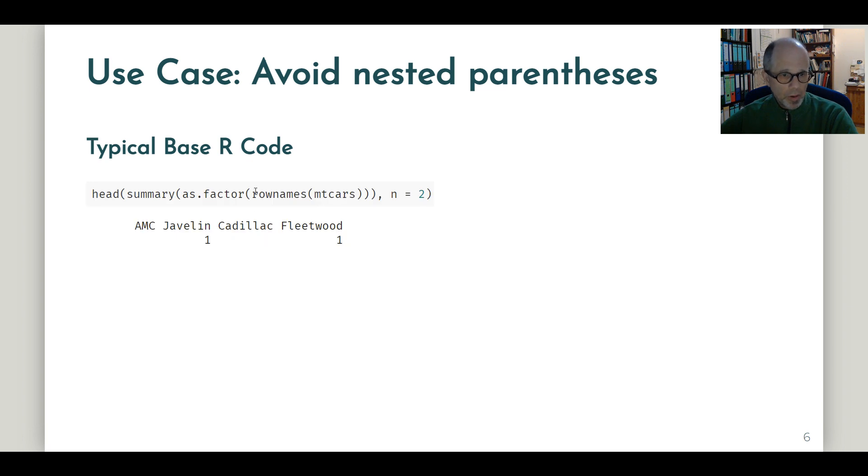So let's see what the pipe can do for us in this case. So the typical base R code with the nested parentheses on the left. And with the pipe we could rewrite this code this way. And now we can conveniently read it from top to bottom. So we start out with the mtcars data set, look at the row names, convert to a factor, apply the summary function and then apply the head function. And now note that the parameter n equals 2 is right next to the head function and not torn apart as in the code on the left. So maybe it takes a bit getting used to if you haven't used the pipe before, seeing these empty parentheses, but always the pipe inserts the object that was calculated on the previous line of code. So I hope this code makes sense to you. And we can see that the pipe can help us avoid nested parentheses and improve readability of our code.